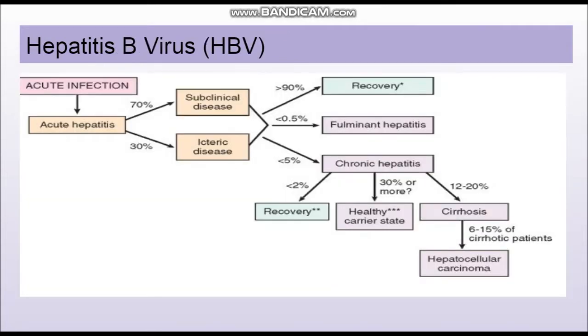Now going to the disease spectrum. Hepatitis B virus usually causes a very subclinical disease, but can also lead to hepatic failure and chronic liver disease. Acute infection can lead to acute hepatitis. Mostly it leads to a subclinical disease with no symptoms. In some patients it can cause jaundice, however these patients mostly recover.